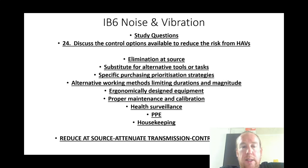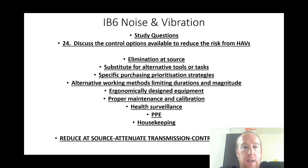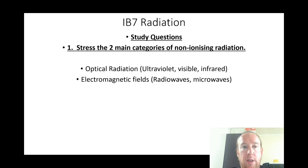Discuss the control options available to reduce risks from hand-arm vibration: elimination at source, substitute for alternative tools or tasks, specific purchasing prioritization strategies, alternative working methods, limiting durations and magnitudes, ergonomically designed equipment, proper maintenance and calibration, health surveillance, PPE, and housekeeping — covering elimination, attenuation, transmission, and control at receiver.